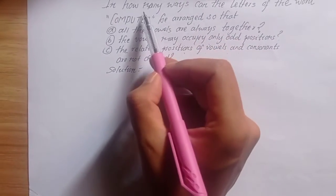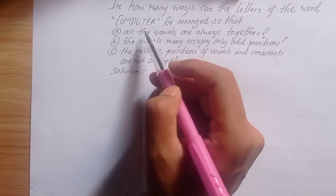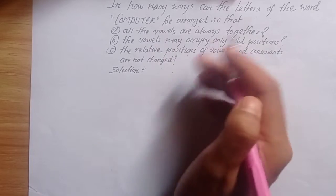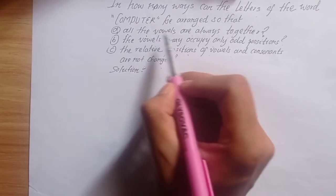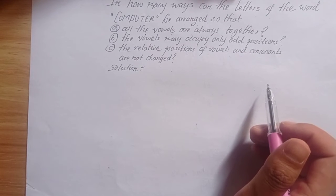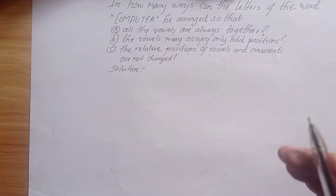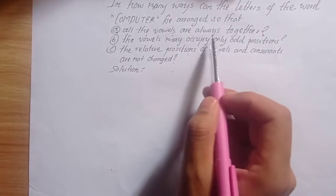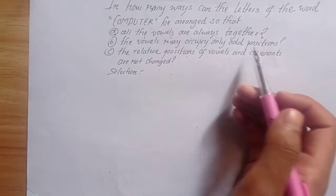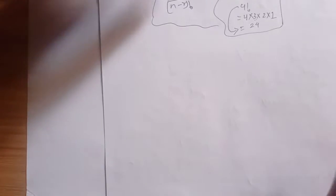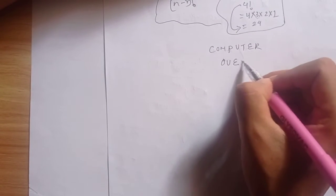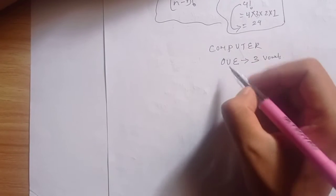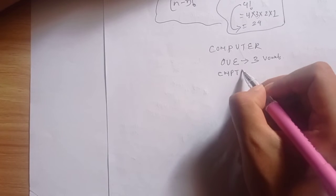So in how many ways can the letters of the word COMPUTER be arranged? In the word COMPUTER — C, O, M, P, U, T, E, R — the vowels are O, U, E, that is three vowels. The consonants are C, M, P, T, R — five consonants.